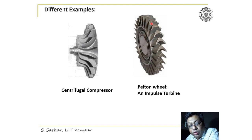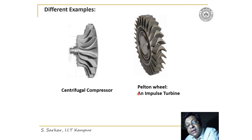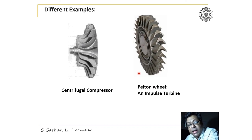Another example I have shown is the Pelton wheel, which is a primitive machine. A water jet is produced by the nozzle, and the water jet is deflected by the impeller passage by about 165 degrees, producing thrust. As the water is deflected by the impeller, the pressure remains constant. That is why it is called an impulse turbine.